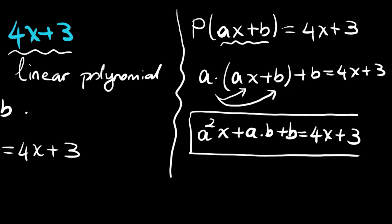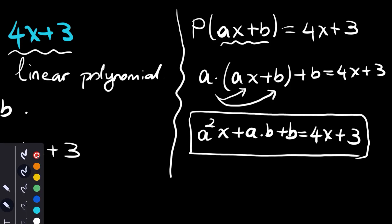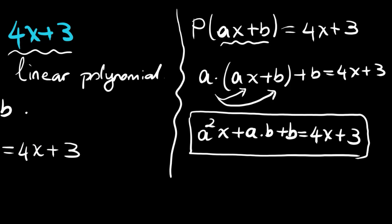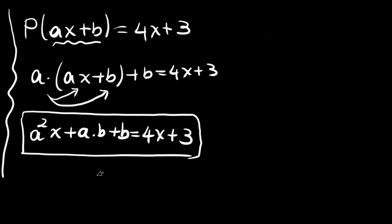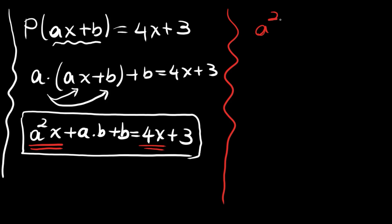This is a polynomial equation and we will use the rule that the coefficients of X should be equal on both sides: A² = 4, and the constant terms must also be equal: AB + B = 3.